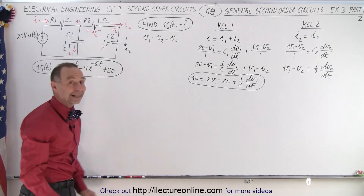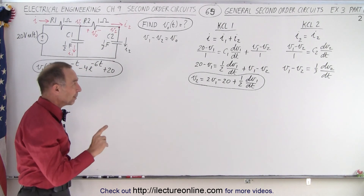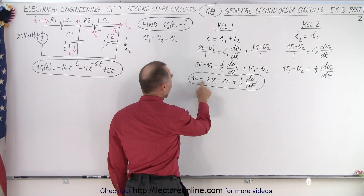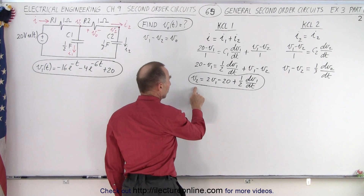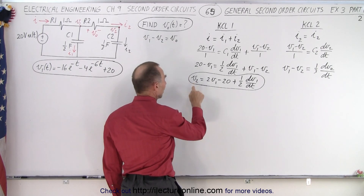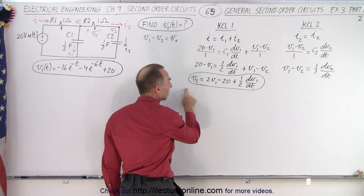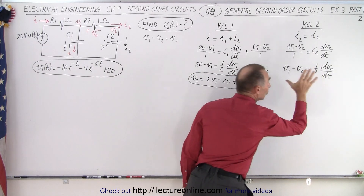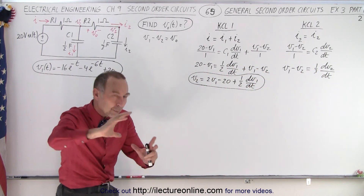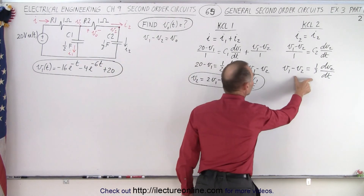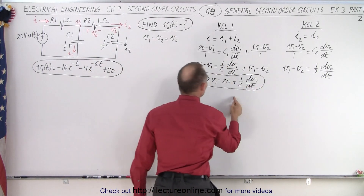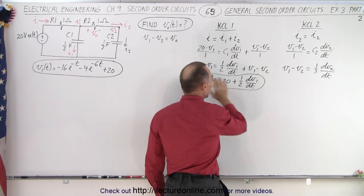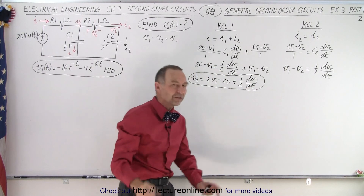Notice I kept some of what we did last time on the board. What we did last time was we used this equation, then we took the derivative of this equation, and then we found V2 and the derivative of V2 with respect to time, and plugged it into this equation to make it an equation of V1 alone. Now we want to reverse that order — we want to use this equation in order to substitute for V1 here, and the derivative of V1 with respect to time, to make this an equation of only V2.